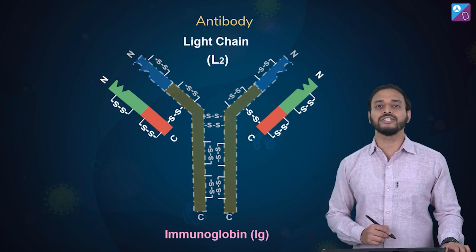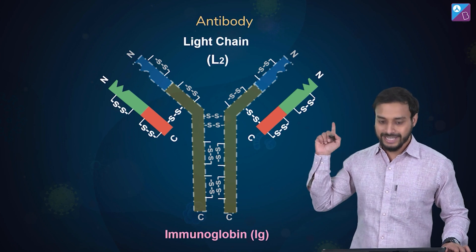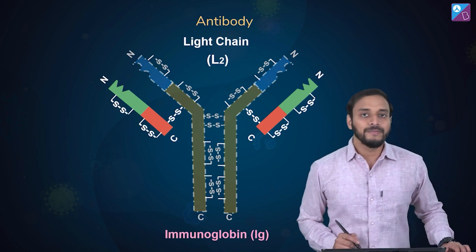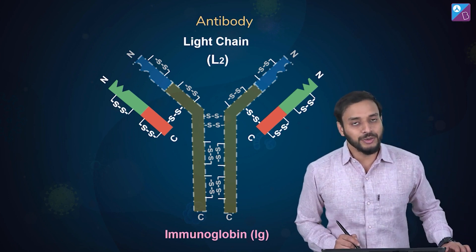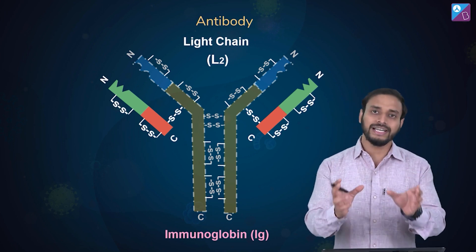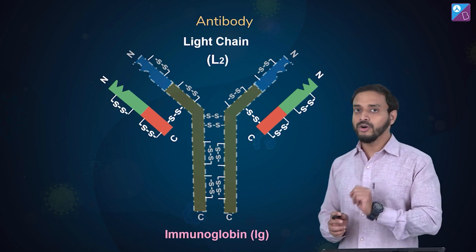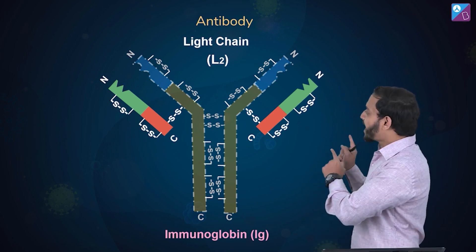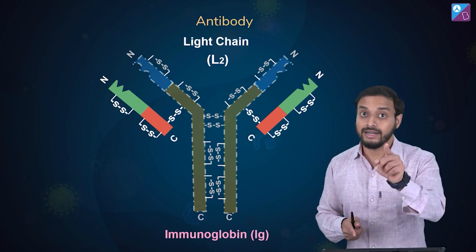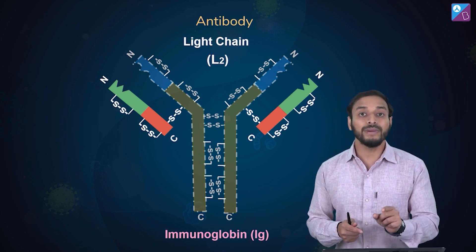Now let's move on to the light chains. There are two light chains. They are called light chains because their molecular weight is lesser and they are shorter in size. These light chains are linked to the heavy chains by disulfide bridges as well.